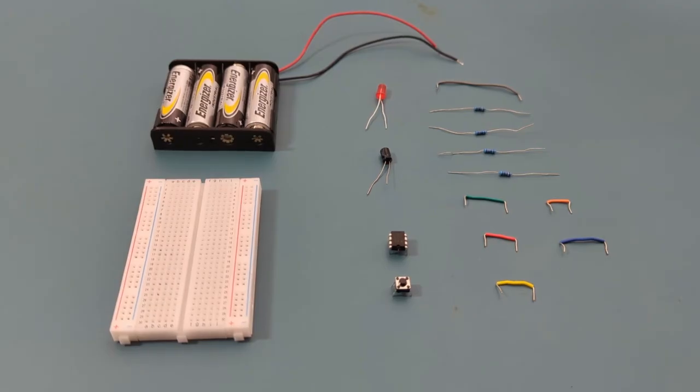Here are all the components you need to set up this circuit. One red LED, one 10 microfarad capacitor, one 150 ohms resistor, three 10,000 ohms resistors, six jumper wires,